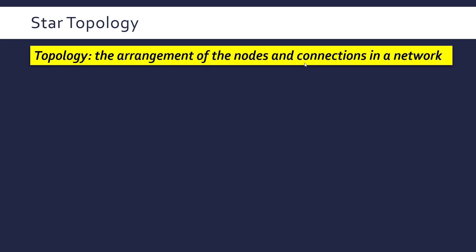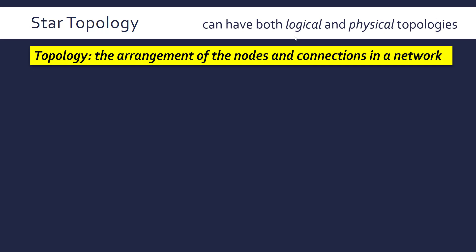There are various ways you can arrange networks, so various topologies, and we're going to look at two. We can approach topologies from both a logical and a physical perspective. Logical is referring to the operation of the topology or the network, and physical is referring to how it's actually laid out in real life. We'll come back to that right at the end of this video.